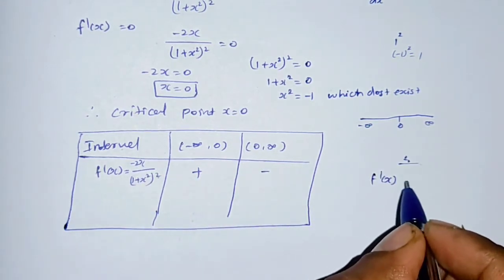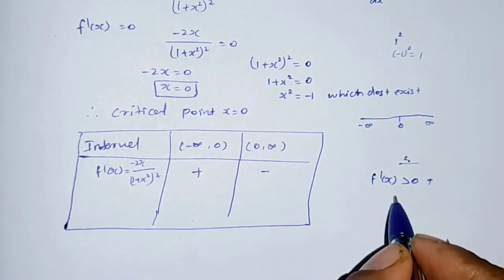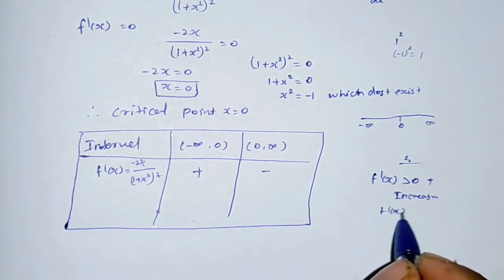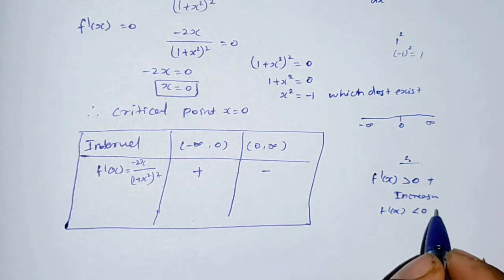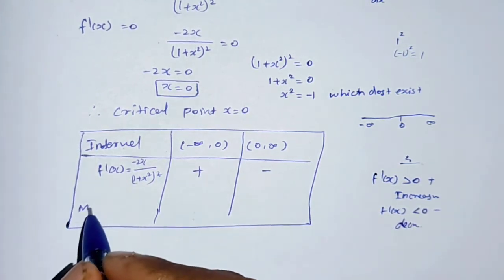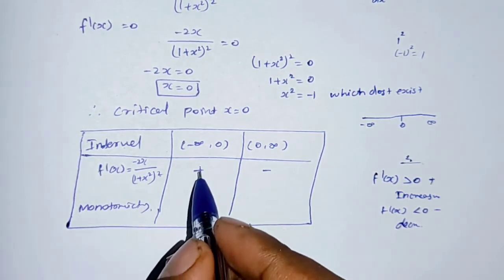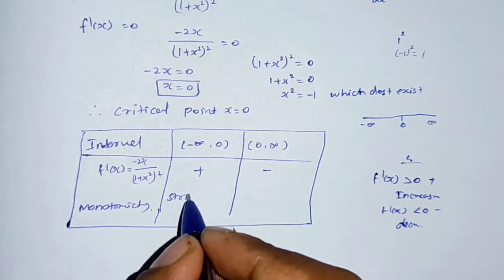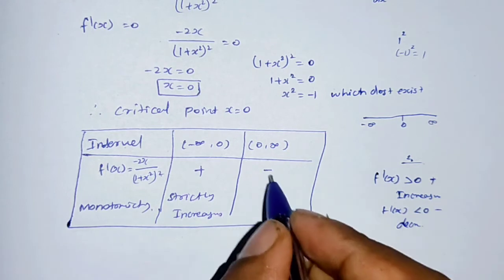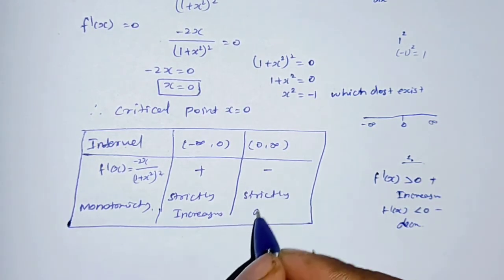So f'(x) is positive on (-∞, 0), meaning the function is strictly increasing on that interval. Substituting x = 1: numerator is -2 times 1 = -2, which is negative; denominator is positive. So f'(x) is negative on (0, +∞), meaning the function is strictly decreasing on that interval.